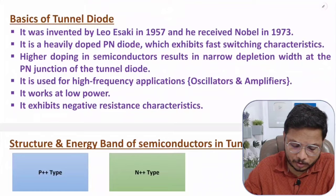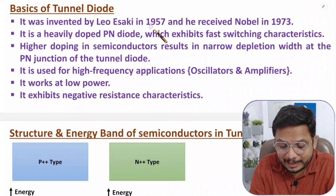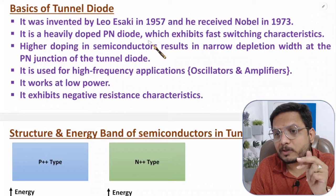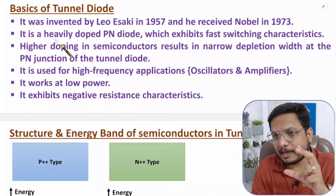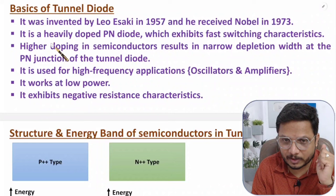Now let us understand the basics of tunnel diode. Tunnel diode was invented by Leo Esaki in 1957, and based on his name this diode is also referred to as the Esaki diode. He received the Nobel Prize in 1973 based on his invention.